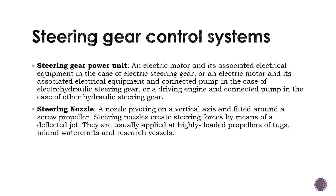The steering gear control systems comprise the equipment through which orders are transmitted from the navigation bridge to the steering gear power units, including transmitters, receivers, hydraulic control pumps and their associated motors, motor controllers, piping, and cables. The steering gear power unit is an electrical motor and its associated electrical equipment in the case of electric steering gear, or an electric motor and connected pump in the case of electro-hydraulic steering gear.